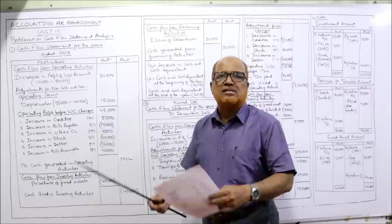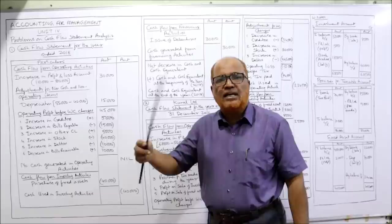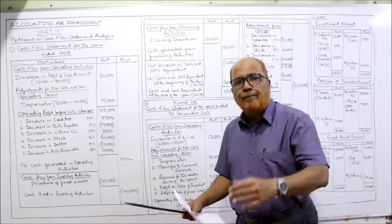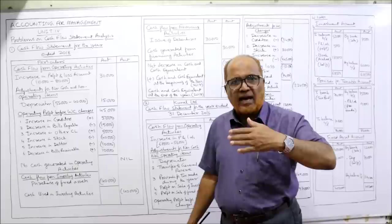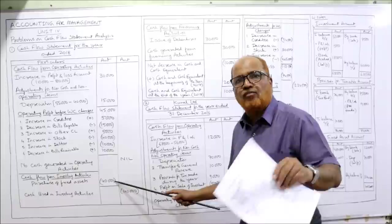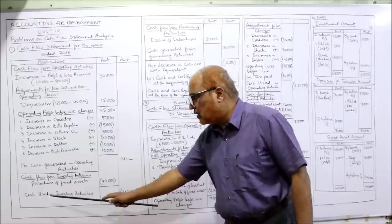Now cash flow from investing activity. For investments we consider fixed assets. Last year gross block 1,00,000, current year 1,40,000 — fixed assets increased by 40,000. When fixed assets increase it is due to purchase. When we purchase a fixed asset there is cash outflow — whenever we purchase something the cash goes out. So purchase of fixed asset: cash outflow, written in bracket. Take this 40,000 in the outer column in bracket.